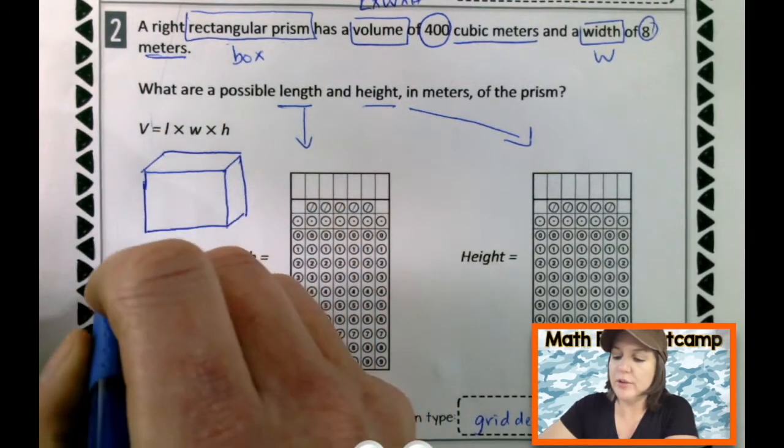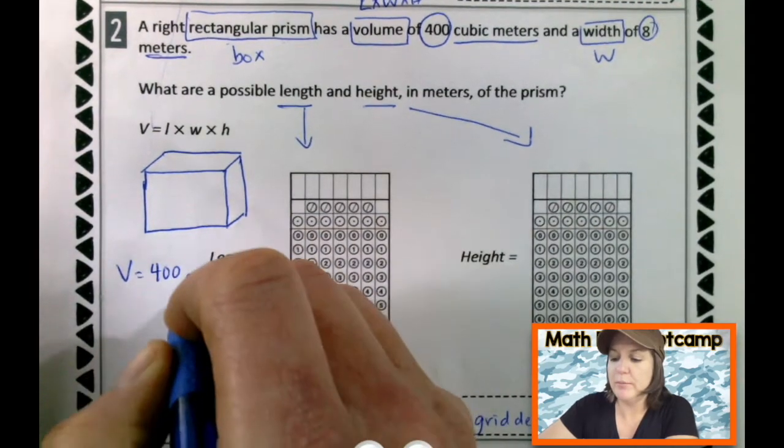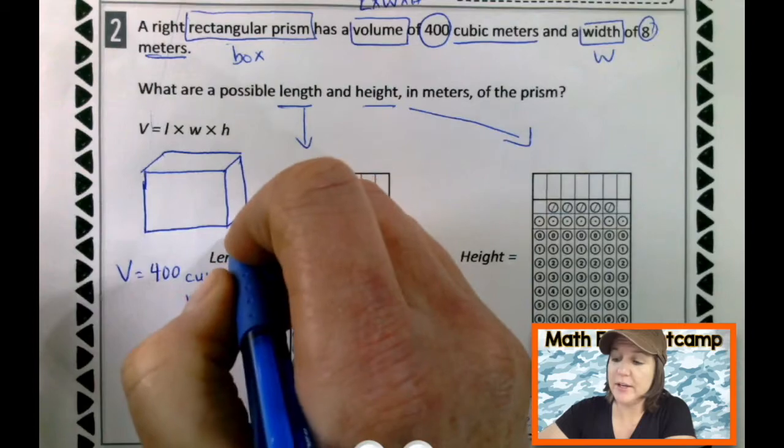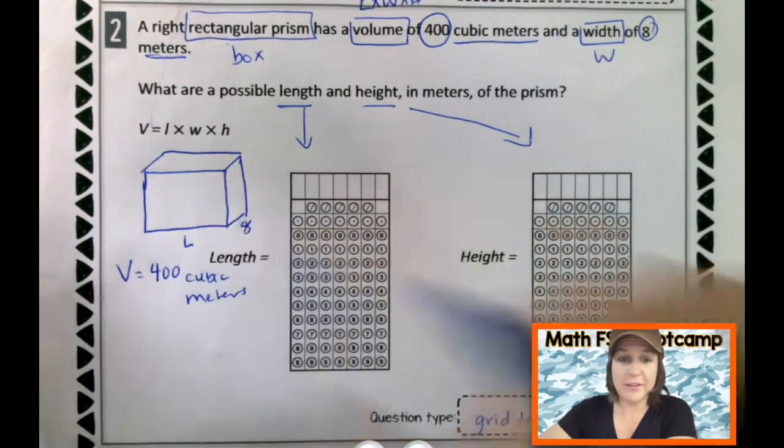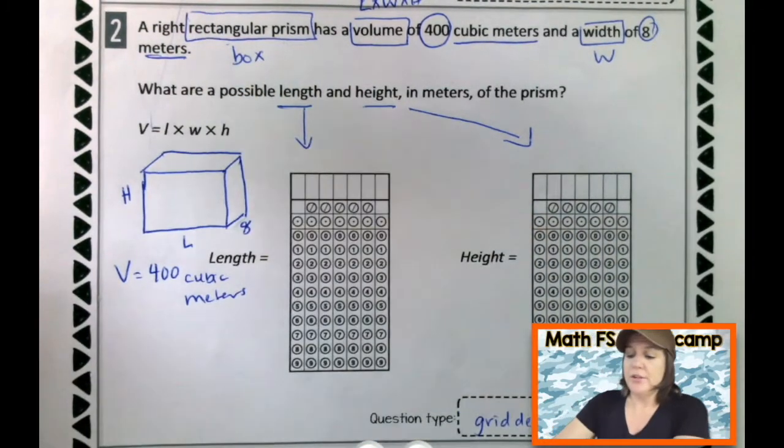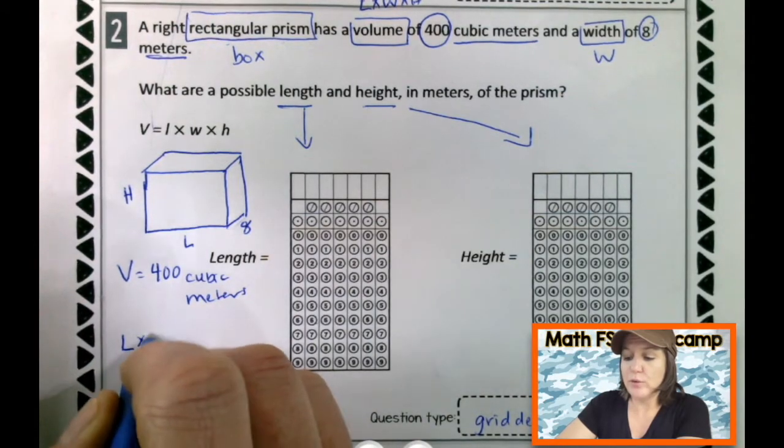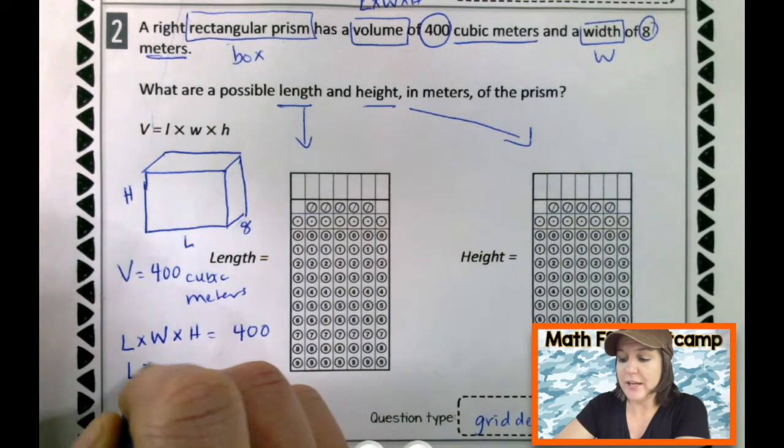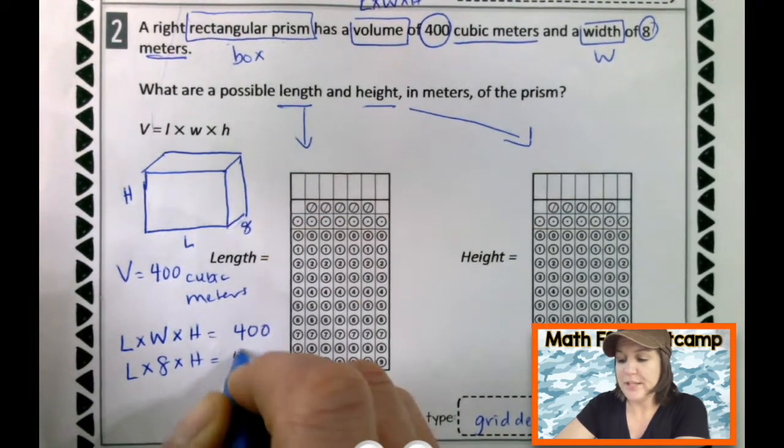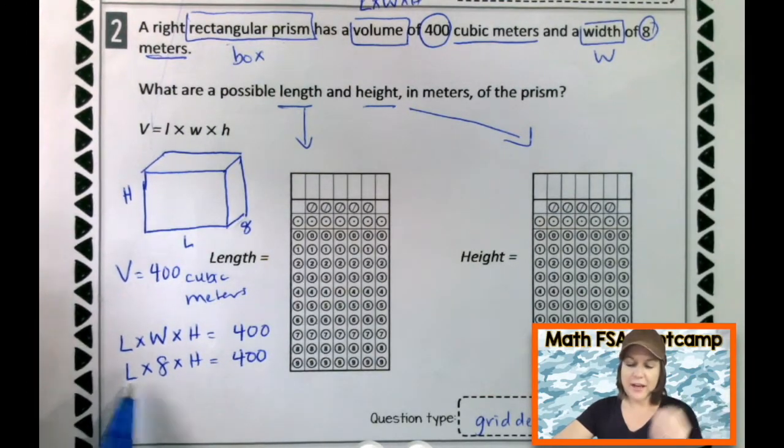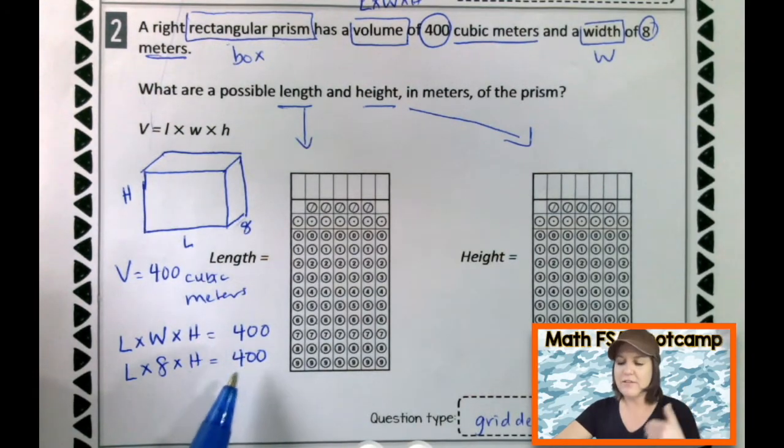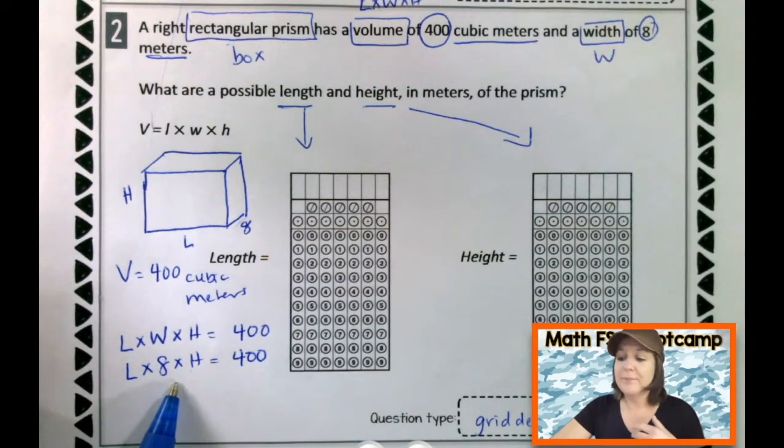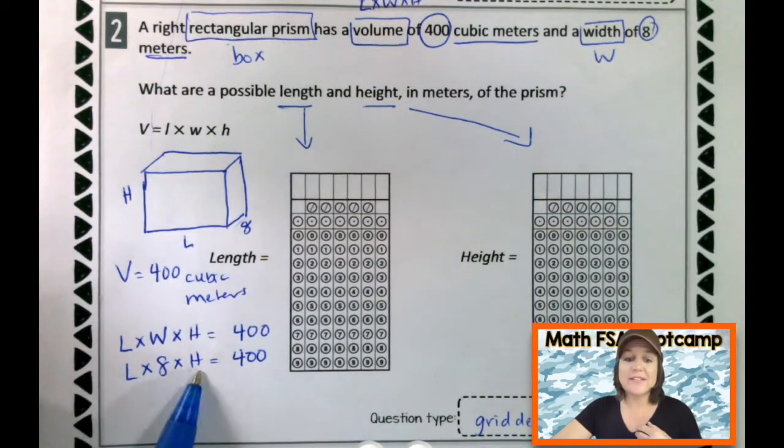Okay. Now let's plug it in. We know that this whole volume equals 400 cubic meters. And we also know the width. The width. So that would be this part right here is 8 meters. But we don't know the length and we don't know the height. We have to figure that out. So what we do know would be length times width times height equals 400. We also know that the width is 8. So length times 8 times height equals 400.